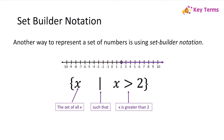Now let's learn about set builder notation. Another way to represent a set of numbers is using set builder notation. It's like using a mathematical sentence, but we abbreviate with the symbols from our chart. It's kind of like when you're texting someone and you text BRB instead of writing out "be right back" — it's just an abbreviated form of a sentence. We use these curly brackets, and they're going to contain our mathematical sentence.